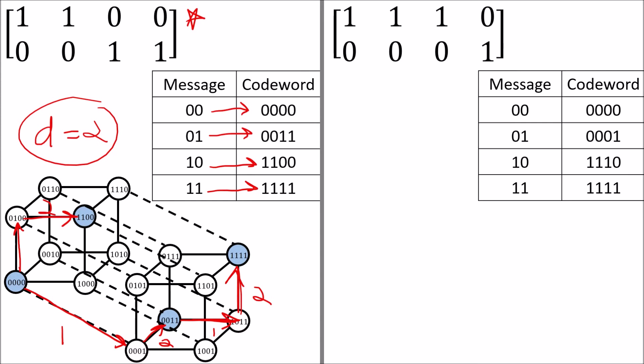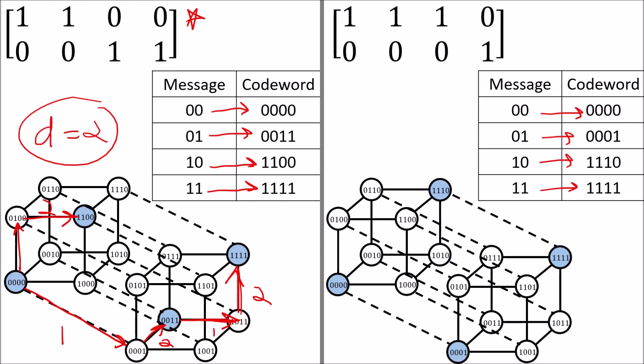With this other generator matrix, which maps these two-bit messages to these different four-bit code words, we see that in some cases the distance is three, but in other cases the distance is just one. So the minimum distance is the smallest distance between any two valid code words, and here the minimum distance is one.